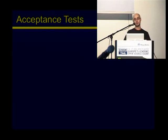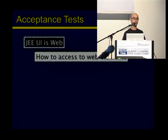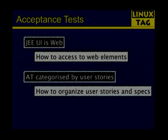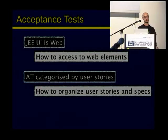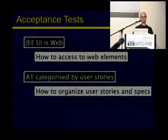In enterprise applications, we have a problem: we need user interface access. Typically enterprise applications use the web, so we need a framework that can access web elements, can open different kinds of browsers, and can also organize the user stories, acceptance criteria, and examples in a better way than just as a document.